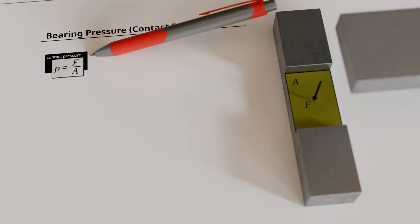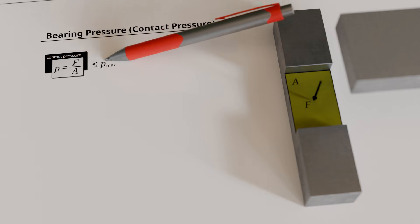As with other types of loading, a maximum allowable bearing pressure must not be exceeded, otherwise the contact surfaces may be damaged. Therefore, the actual bearing pressure must always remain below or at most equal to the allowable bearing pressure.